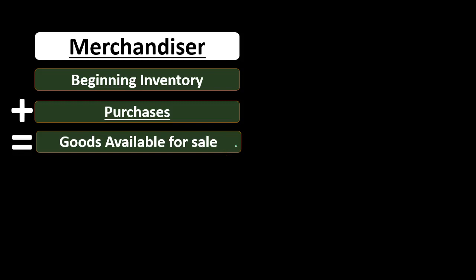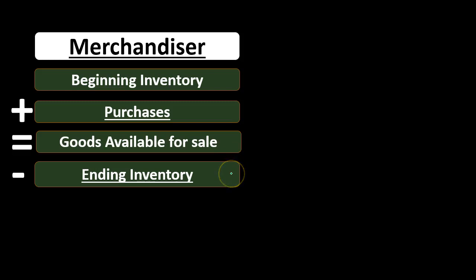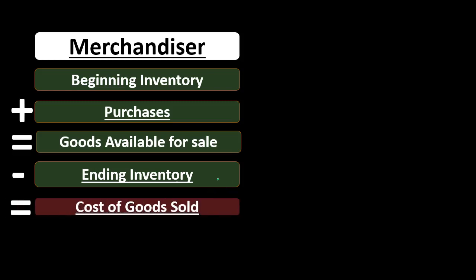Beginning inventory plus purchases gives us the cost of goods available for sale — everything we could have sold during the time period. This is more of a periodic-type calculation. We then subtract ending inventory, which we typically obtain through a physical count at the end of the period. The inventory available for sale minus what has not yet been sold gives us, on a cost basis, the cost of goods sold.